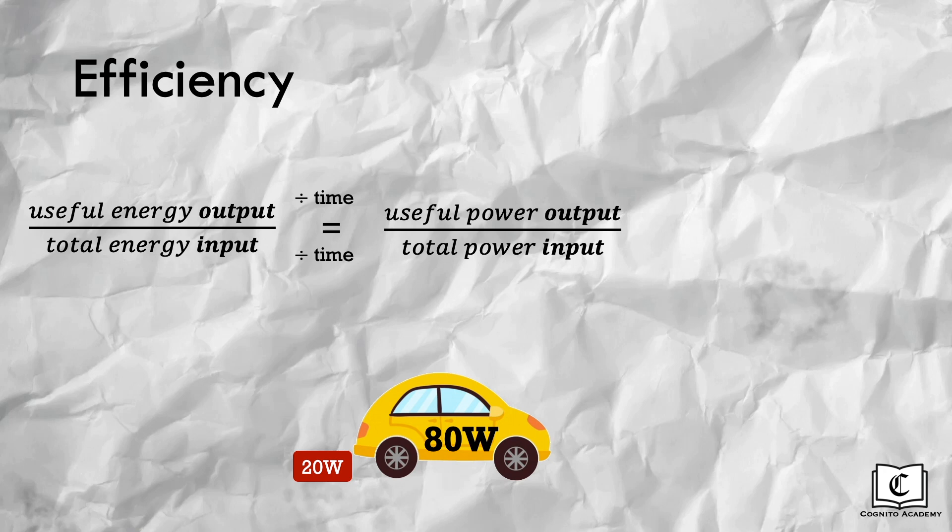In the case of this car, the total power input is the power of the engine which is 80 watts. And the useful power output is simply 80 watts minus the power loss of 20 watts, which gives us 60 watts. And this gives us an efficiency of 75%.